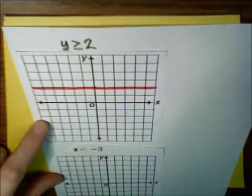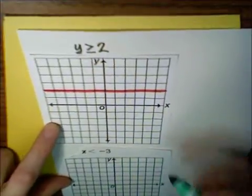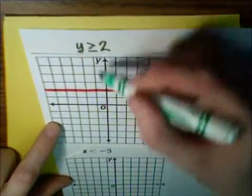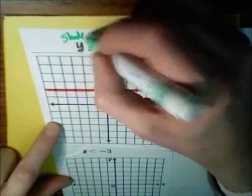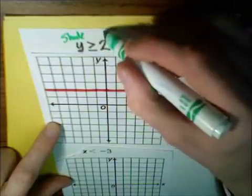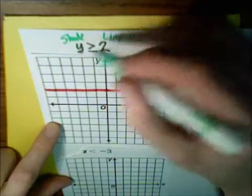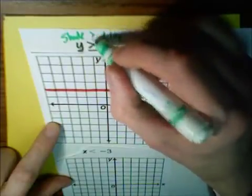And now, the question is, where do we shade? The y-axis goes up and down. And this says, shade greater than the line.